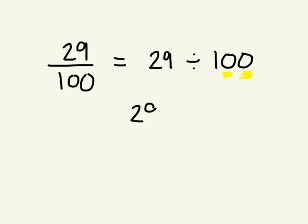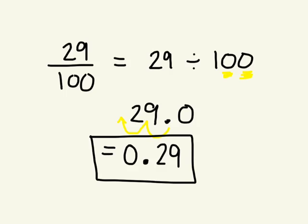So we have 29.0. Move it two places to the left. One, two. And I end up with a decimal in front of the two nine. So it becomes 0.29. So 29 over 100 is equal to 0.29.